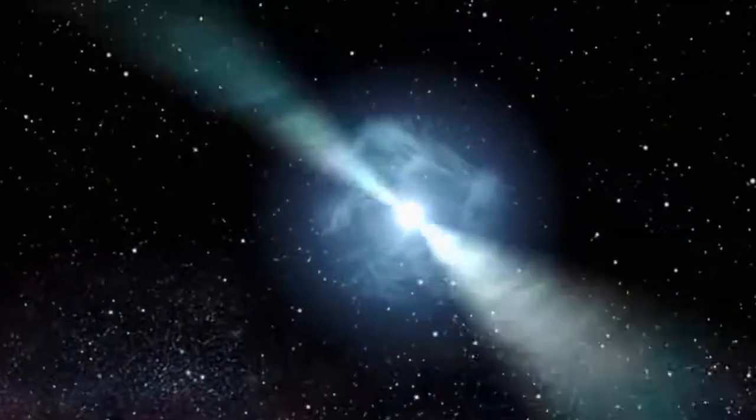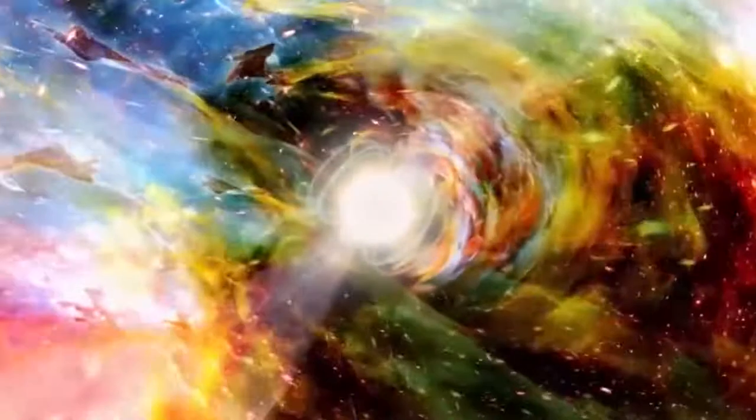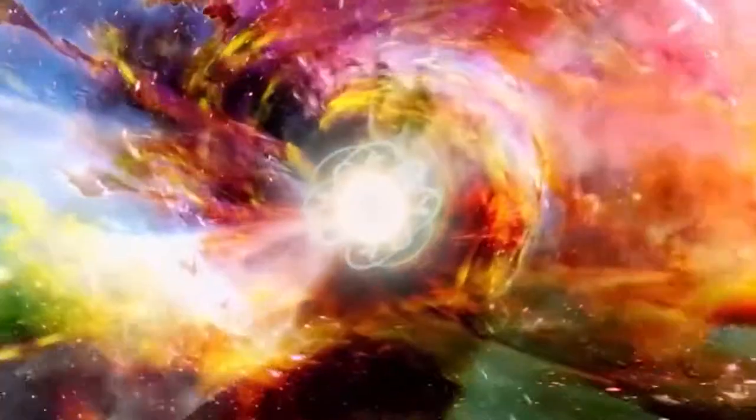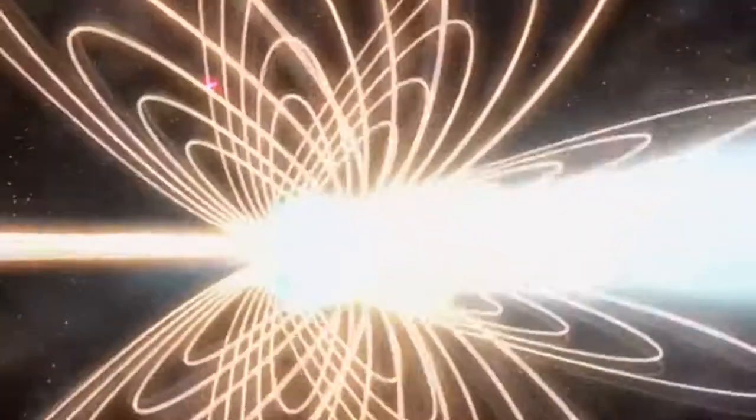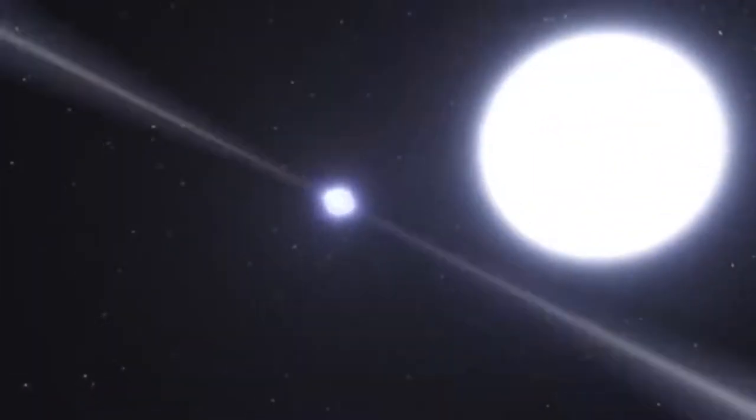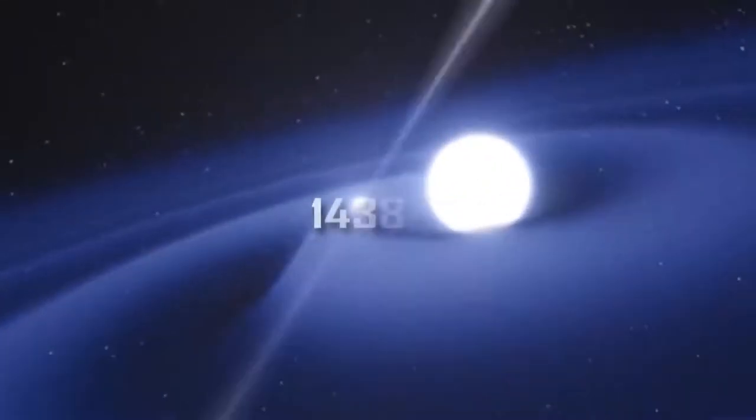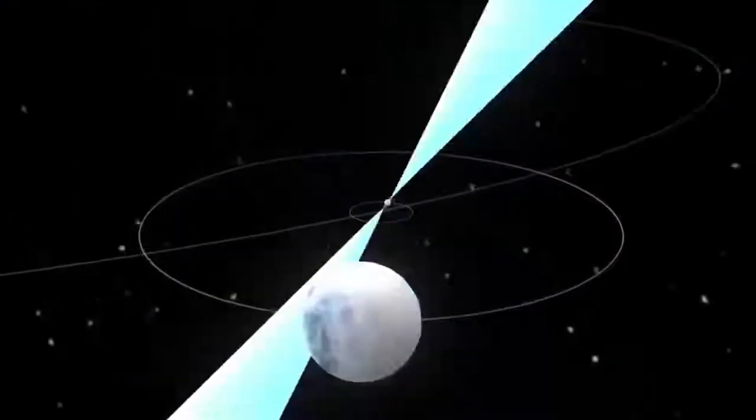It's also a pulsar, which is a neutron star that emits strong beams of electromagnetic radiation from its magnetic poles and has intense magnetic fields about a trillion times stronger than Earth's magnetic field. Some pulsars have an amazingly fast rotational spin, but 1438 is known as a millisecond pulsar that has a spin period of 5.4 milliseconds.